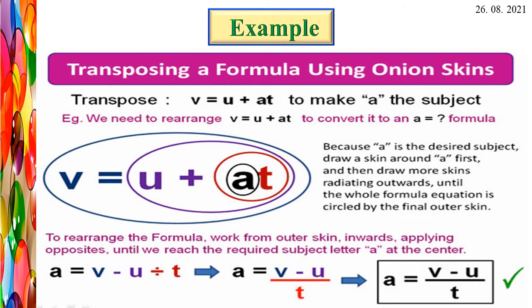Transposing a formula using onion skins. Let's see a real life example of the transposing method. Take one onion. We want to get the inner part of the onion, so we have to remove or peel the outer part of the onion to get the inner part.